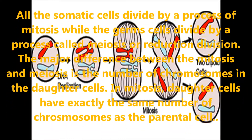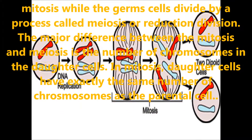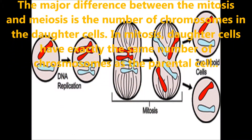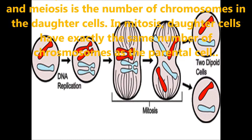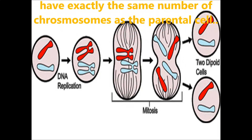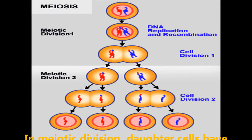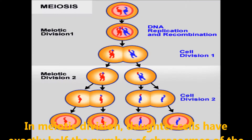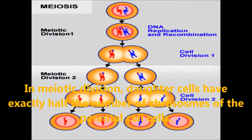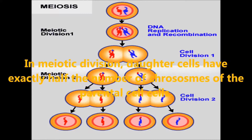The major difference between mitosis and meiosis is the number of chromosomes in the daughter cells. In mitosis, the daughter cells have exactly the same number of chromosomes as the parental cells. In meiosis, the daughter cells have exactly half the number of chromosomes of the parental cells.